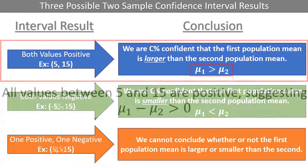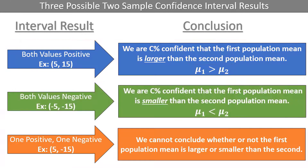The same kind of logic can be applied to the two other rules. Only when the number 0 is contained in the interval, such as in case 3, can we not conclude whether or not the first mean is greater or less than the second mean. Thinking of our confidence intervals in this way is very similar to the results of a hypothesis test, which we will discuss in more detail in future videos.